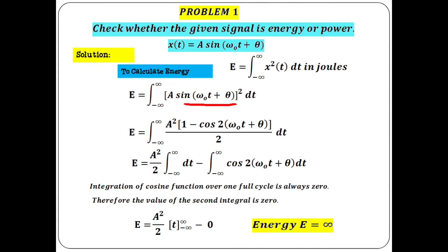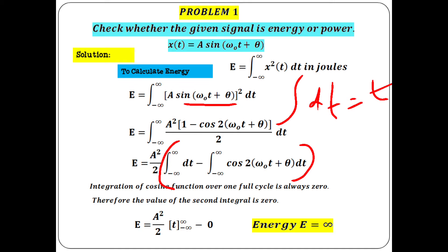Separate into two integrals, taking A²/2 as common. So A²/2 times [integral from minus infinity to infinity of 1 dt minus integral from minus infinity to infinity of cos(2ω₀t + 2θ) dt]. The integration of the cosine function over a full cycle is always 0, so the second integral is 0. The first integral of dt is t, evaluated from minus infinity to infinity, giving infinity.